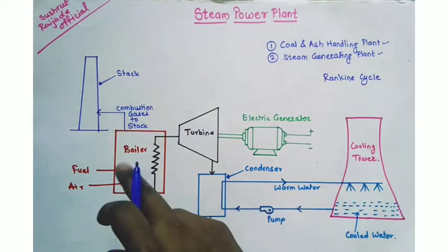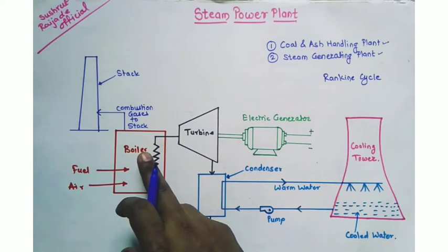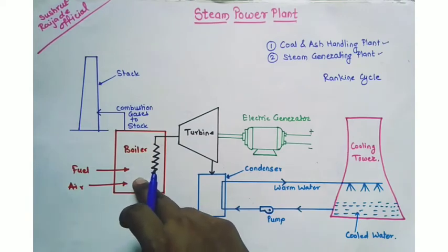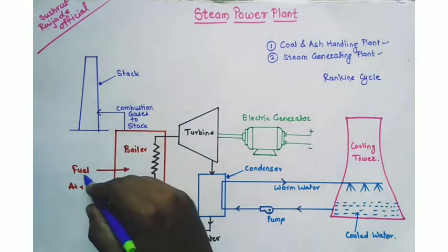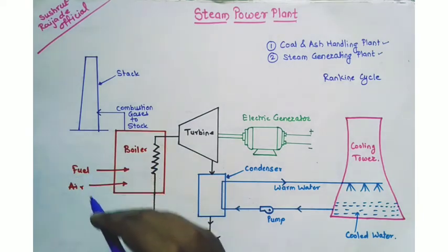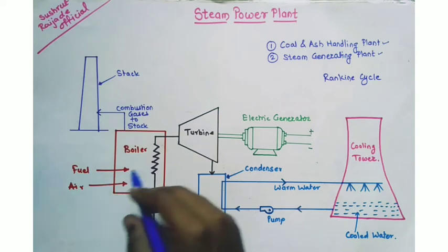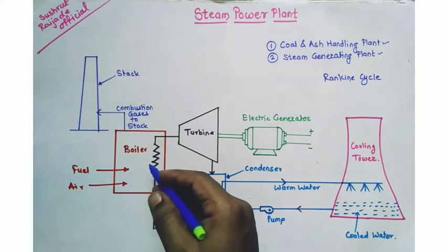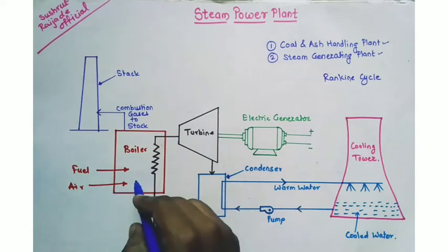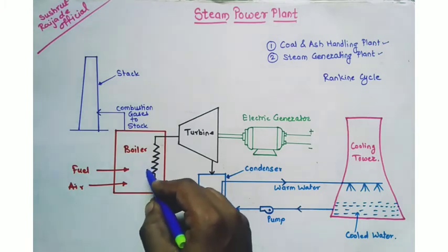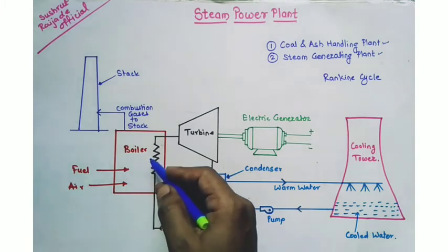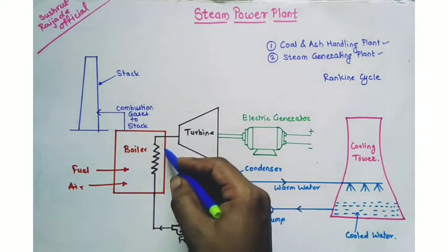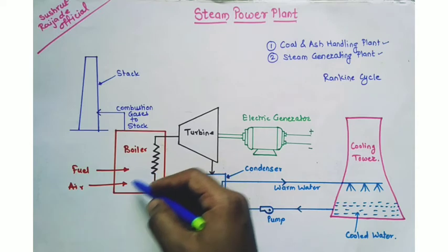Steam is produced in the boiler by utilizing the heat coming from coal combustion. The fuel used in the steam power plant is generally coal, which is burned in the combustion chamber of the boiler, producing a large amount of heat. That combustion takes place with the help of air coming from the air preheater, and the heat produced is then exchanged with water to produce steam from the boiler.